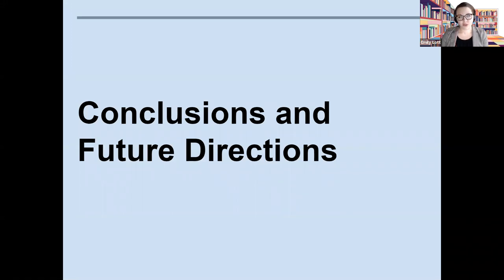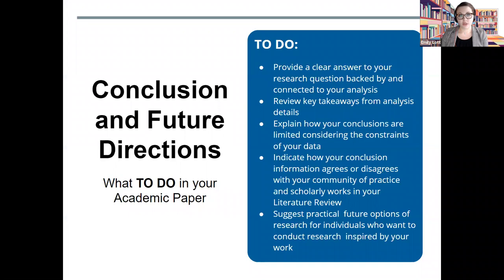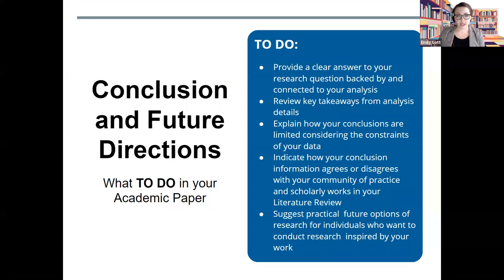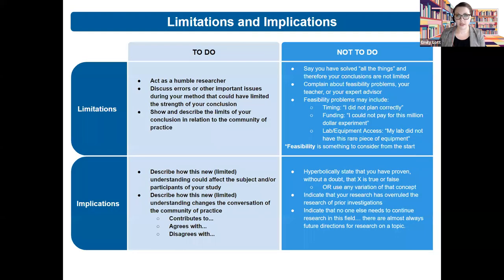Lastly, we arrive at the conclusion and future directions element. Make sure you provide a clear answer to your research question backed by and connected to your analysis. Review key takeaways from your analysis details. Explain how your conclusions are limited, considering the constraints of your data. Indicate how your conclusion information agrees or disagrees with your community of practice and scholarly works in your literature review. Suggest practical future options of research for individuals who want to conduct research inspired by your work. I want to pause and clarify two major terms for this element: your limitations and your implications.